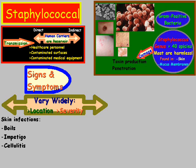Then there's bacteremia, which is probably better known as blood poisoning. The problem with this is the bacteria can travel to locations deep inside the body and produce infections that might affect internal organs, the brain, the heart, the lungs, bones, muscles, and any surgically implanted devices.